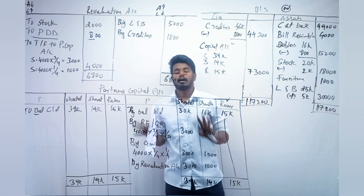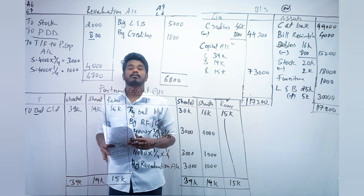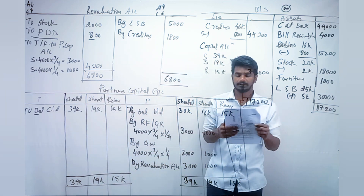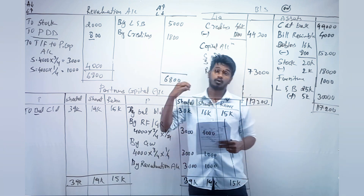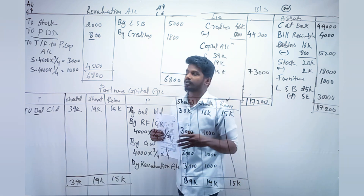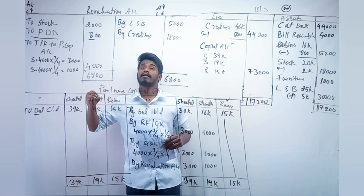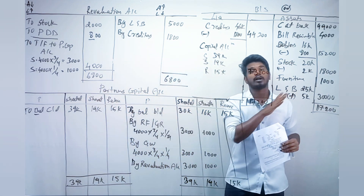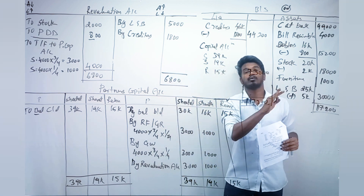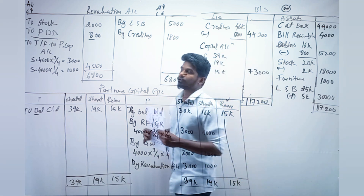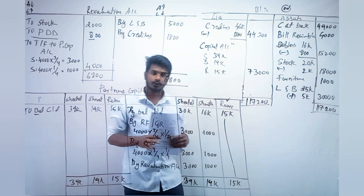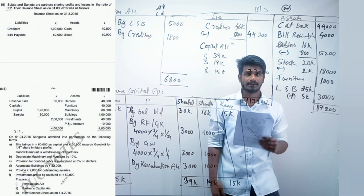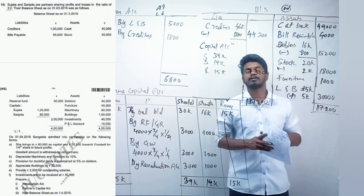Hello everyone, welcome to the second video on admission of partners. We are going to discuss 12-mark questions — there are three questions. In the previous video we completed a full question; if you didn't watch that, please watch it first or you won't understand this. Let us start with the equation on the board.